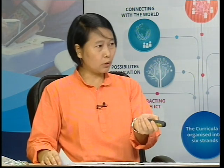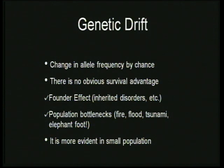Today's session will focus on two more reasons for changes in allele frequency: genetic drift and gene flow. Genetic drift is any change in allele frequency by chance. Unlike natural selection — which was not by chance, because the changes were advantageous for the population — genetic drift has no obvious survival advantage. The change happens by chance.